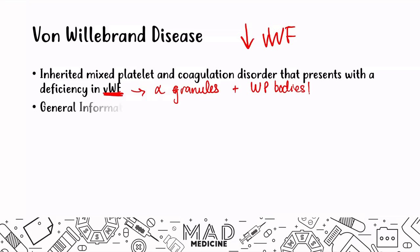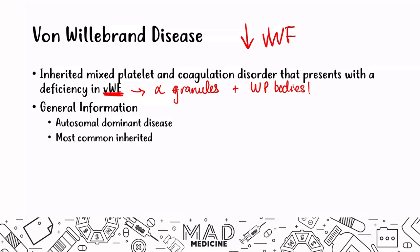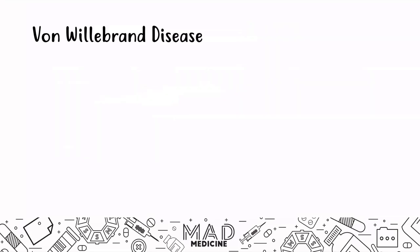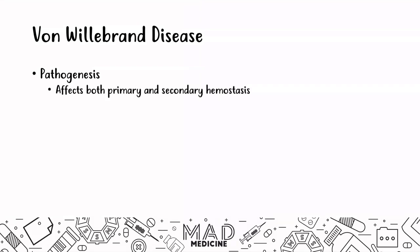Von Willebrand disease is an autosomal dominant disease and is the most common inherited primary hemostatic disease we know of. It occurs more commonly in Caucasians than any other race. When it comes to pathogenesis, VWF plays an important role in both primary and secondary hemostasis, so a lack of VWF is going to affect both.